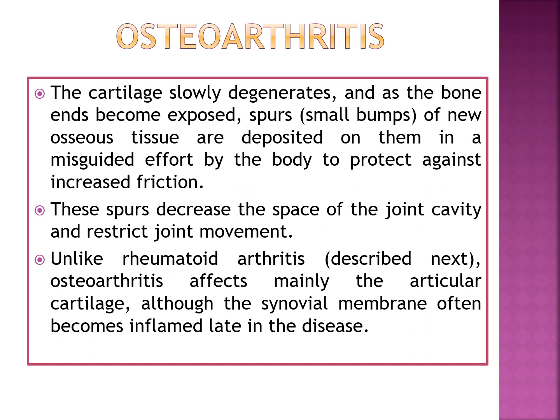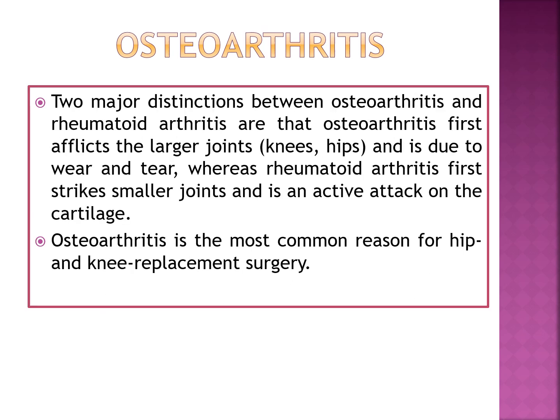Unlike rheumatoid arthritis, osteoarthritis mainly affects the articular cartilage, although the synovial membrane often becomes inflamed late in the disease. The two major distinctions are that osteoarthritis first afflicts the large joints — for example, knees and hips — and is due to wear and tear, whereas rheumatoid arthritis first strikes smaller joints and is an active attack on the cartilage. Osteoarthritis is the most common reason for hip and knee replacement surgeries.